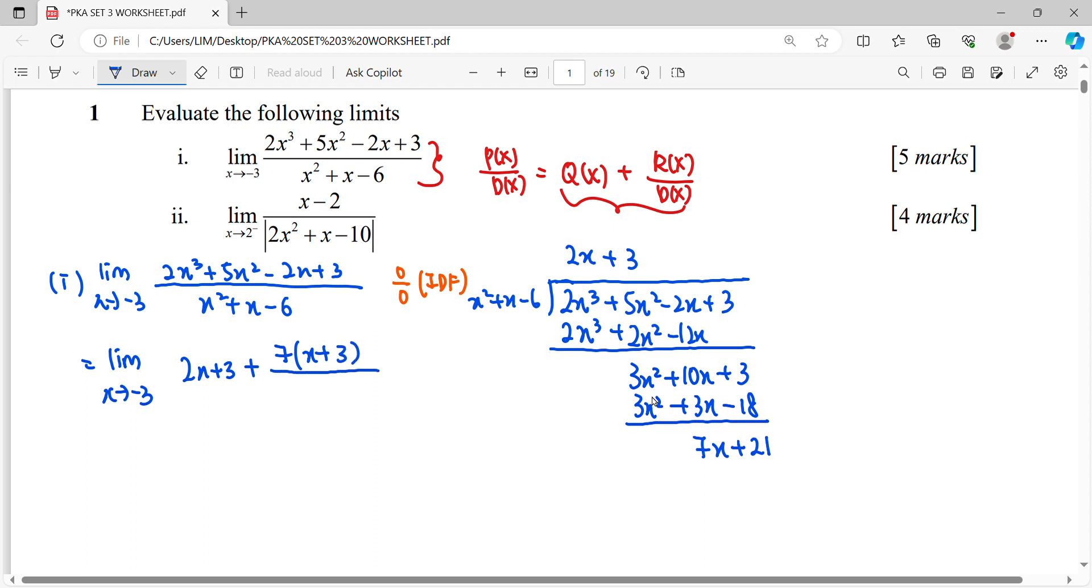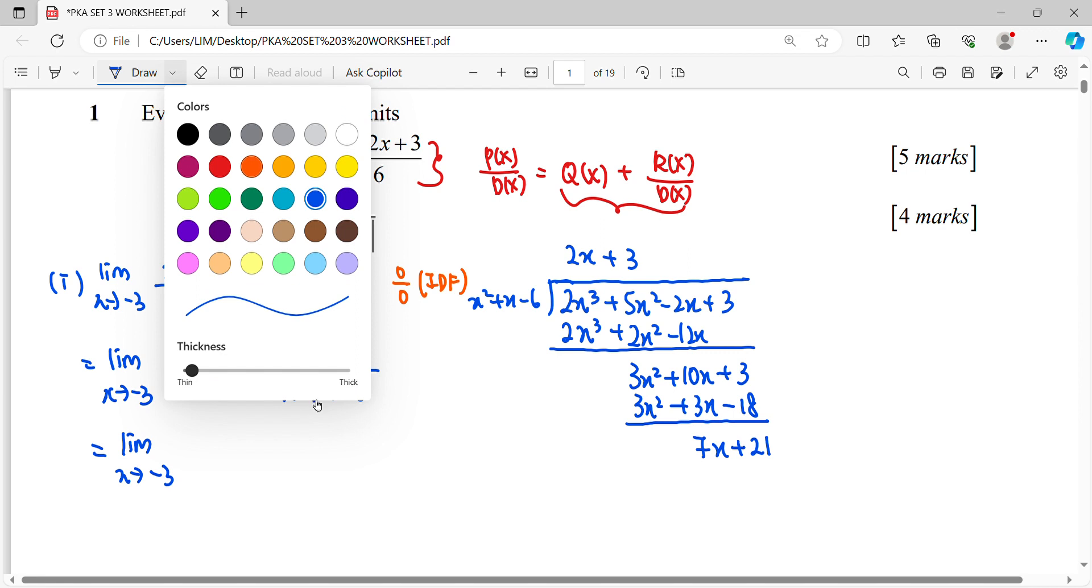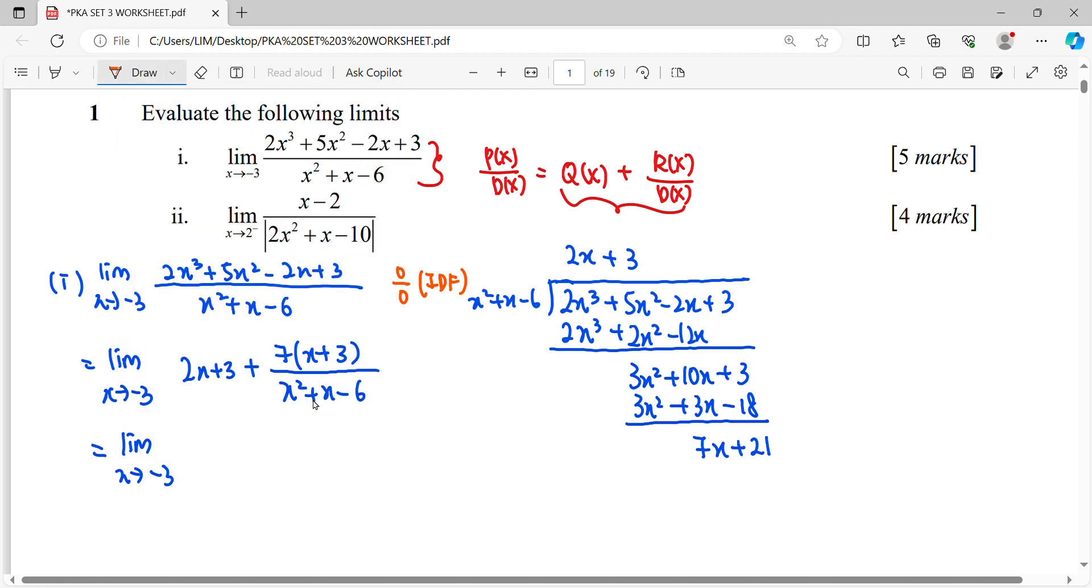Our divisor is X squared plus X minus 6. When we substitute negative 3 again, we notice we're still in indeterminate form. We haven't simplified the factor of X plus 3 yet.